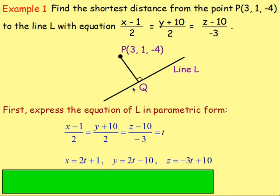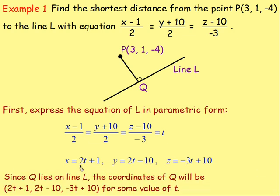We know that point Q lies on this line, and we just worked out the equation of the line in parametric form. So Q will have the coordinates (2T + 1, 2T − 10, −3T + 10) for some value of T, because it lies on the line.